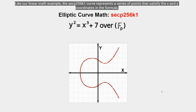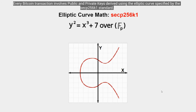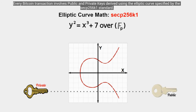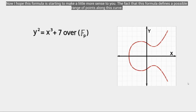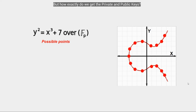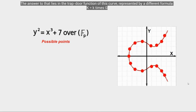The same remains true for Bitcoin's secp256k1 curve, specified by the formula y² = x³ + 7. Just like our linear math example, the secp256k1 curve represents a series of points that satisfy the x and y coordinates in the formula. Every Bitcoin transaction involves public keys and private keys derived by using the elliptic curve specified by the secp256k1 standard. Hopefully this formula is starting to make a little more sense — it defines a possible range of points along the curve.